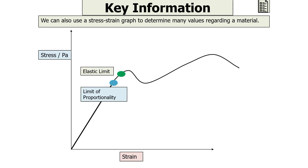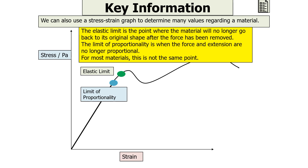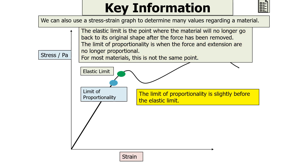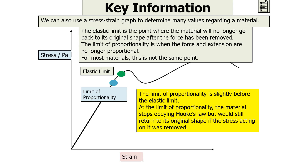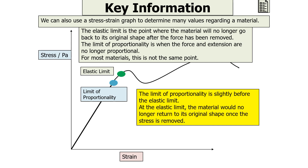The elastic limit is the point where the material will no longer return to its original shape after the force has been removed. The limit of proportionality is when the force and extension are no longer proportional. For most materials, these are not the same point — the limit of proportionality occurs slightly before the elastic limit. At the limit of proportionality, the material stops obeying Hooke's law but would still return to its original shape if the stress were removed. After the elastic limit, the material will no longer return to its original shape.